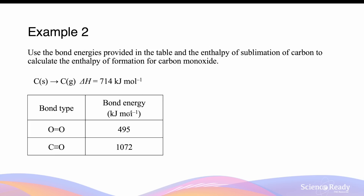Use the bond energy values provided in the table as well as the enthalpy of sublimation of carbon to calculate the enthalpy of formation for carbon monoxide. Whenever you're asked to calculate the enthalpy of formation, let's first write the equation to represent the formation of the compound. Carbon monoxide is CO, and that's a gas under standard conditions.